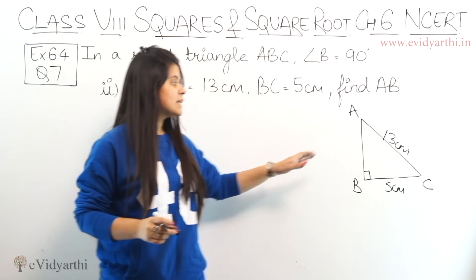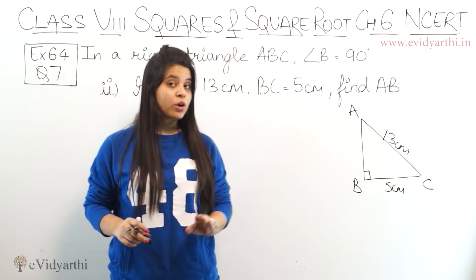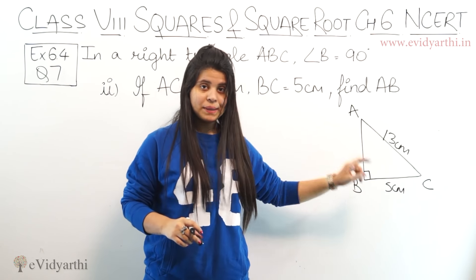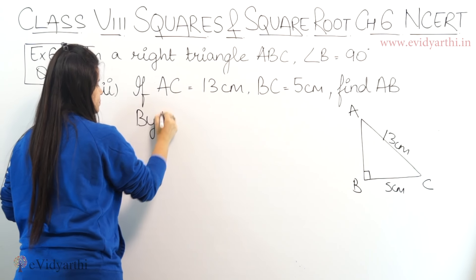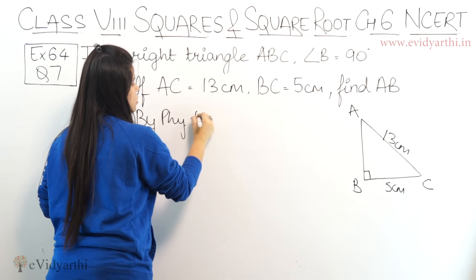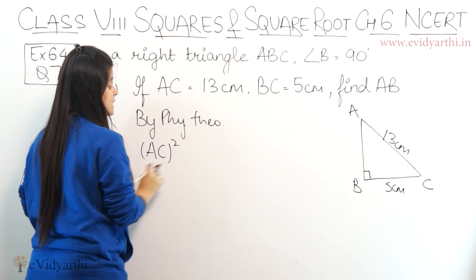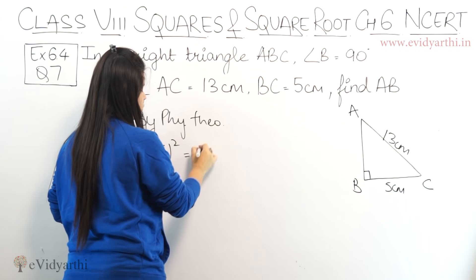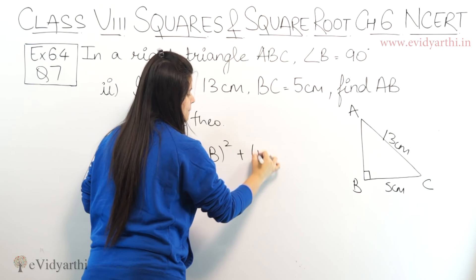Don't make the mistake of writing AB squared equals to AC squared plus BC squared. Because hypotenuse squared equals the sum of the other two. So let's write it again by Pythagoras theorem: AC squared, which is the hypotenuse, equals to AB squared plus BC squared.